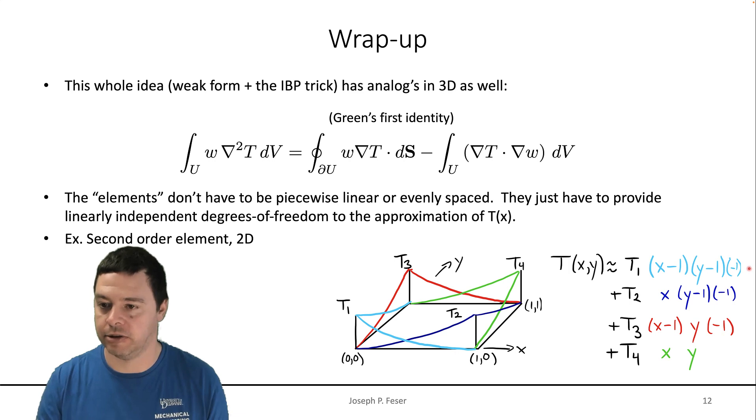So, you build up what I'll call basis functions. So, this light blue thing that's here is a basis function that is associated only with the node T1. So, in a quadrilateral, we've got four corners to our element, and there's four values of temperature that occur, let's say, on the corners of those.